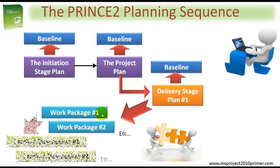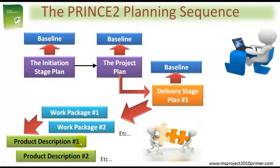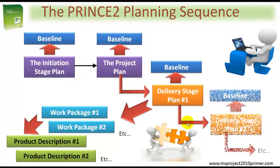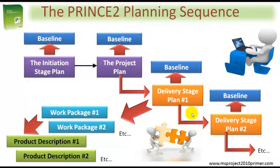Each work package in turn contains at least one product description, although it's normally the case that there will be more than one product being created within each work package. You may well have other delivery stages. The minimum for a PRINCE2 project is the initiation stage plus one delivery stage. Whether it's a simple single delivery stage or multiple delivery stages, you can plug my Microsoft Project PRINCE2 modules straight in.